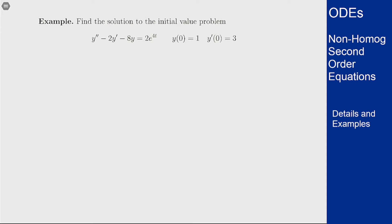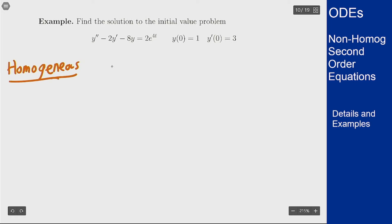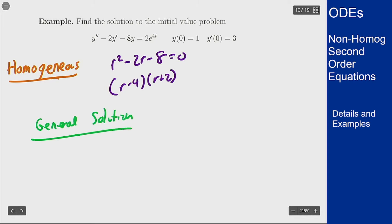For the second example we have y double prime minus 2y prime minus 8y equals 2e^(4t), with initial conditions y(0) = 1 and y'(0) = 3. For the homogeneous part, the characteristic equation is r squared minus 2r minus 8 equals 0, which factors as (r-4)(r+2). So the homogeneous general solution is y(t) = c1 e^(4t) + c2 e^(-2t).